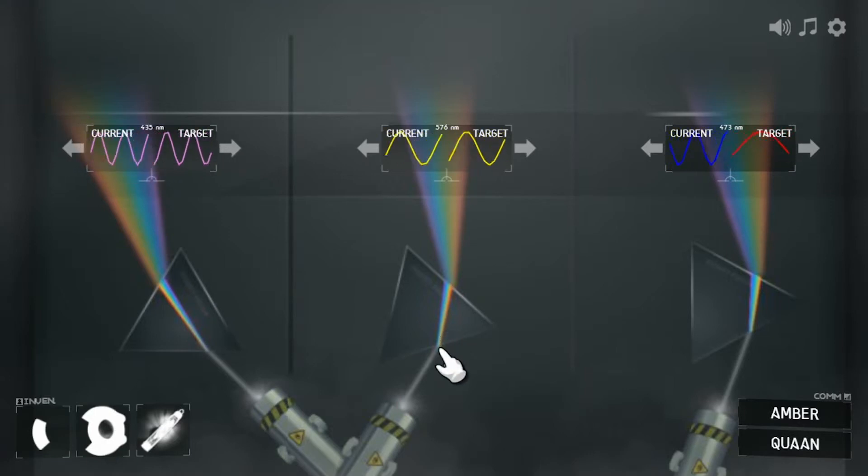And light definitely bends like this whenever it enters or leaves glass on an angle. The bending is called refraction and it happens because glass slows light down.